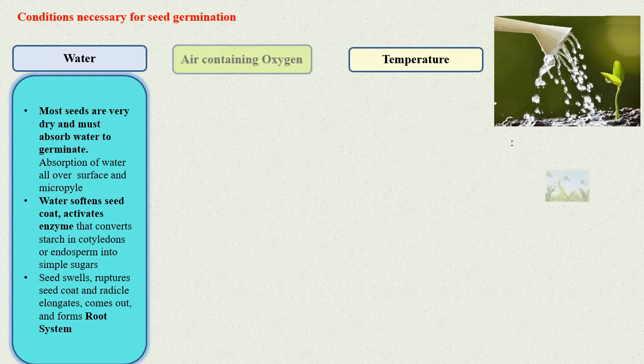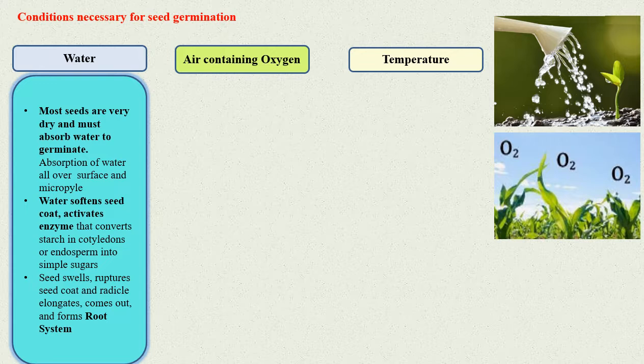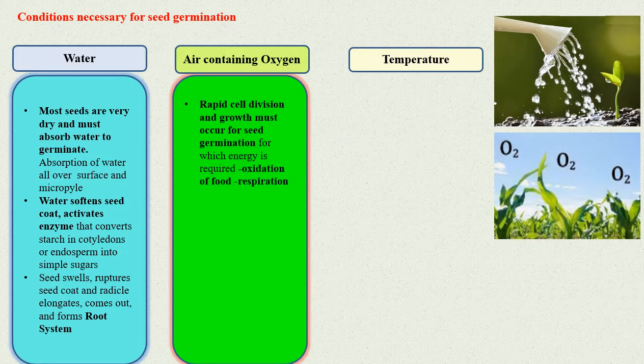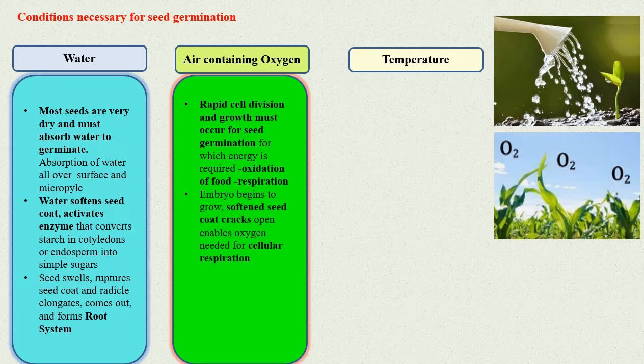Air containing oxygen: Rapid cell division and growth must occur for seed germination, for which energy is required. This energy is provided by oxidation of food through respiration. As the embryo begins to grow, the softened seed coat cracks open.